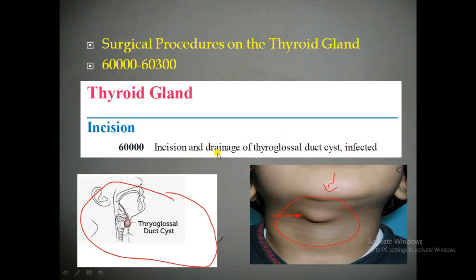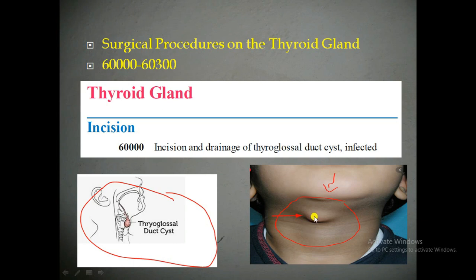Now we will see one of the surgical procedures on the thyroid gland — incision and drainage of thyroglossal duct cyst infected. The thyroglossal duct cyst is a cyst which is formed in the midline of the neck. It is caused when one segment of the thyroglossal duct, present in the neck region, does not close properly during embryonic development, leading to a cyst and causing infection.